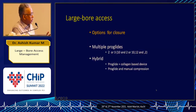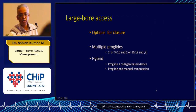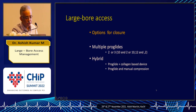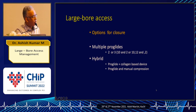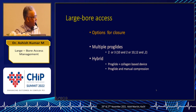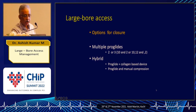The options available for closure are: multiple ProGlides — generally two at the ten o'clock and two o'clock position, or even three at ten, twelve, and two o'clock — or hybrid procedures using ProGlide combined with a collagen-based device. We have also found that ProGlide with manual compression works well: you convert to a smaller access, use one ProGlide, keep a six or seven French sheath in, and remove it later.